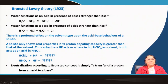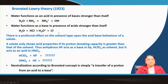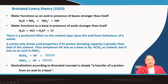Water functions as an acid when it gives a proton to ammonia, which acts as the base, forming OH⁻ from water and ammonium ion from ammonia. Water can function as a base when HCl is present, because HCl is a stronger acid than water. Everything is relative — you have to think about who is the better acid and who is the better base. There is a profound solvent effect: the solvent has an enormous effect in deciding which substance will be an acid and which will be a base.